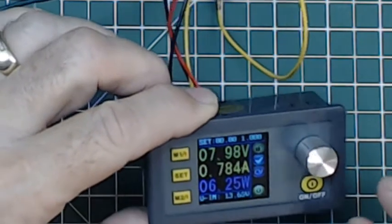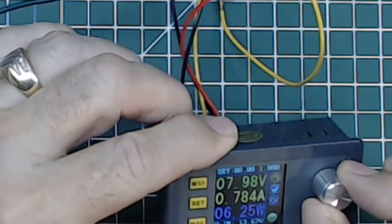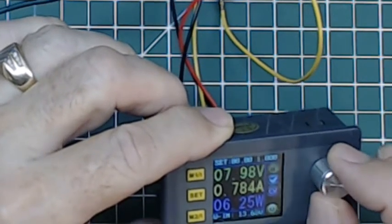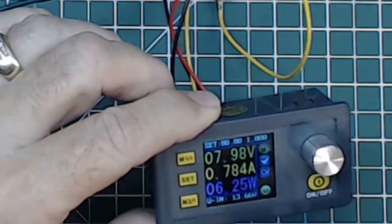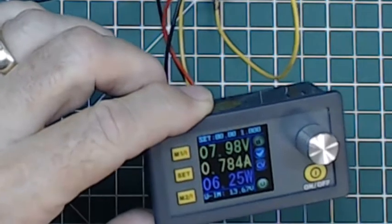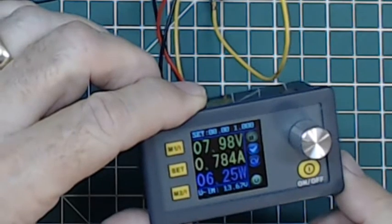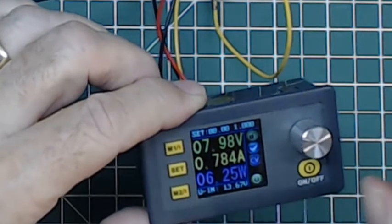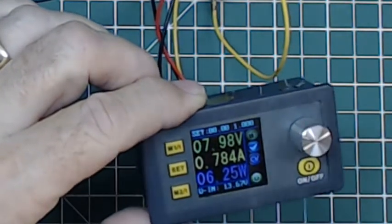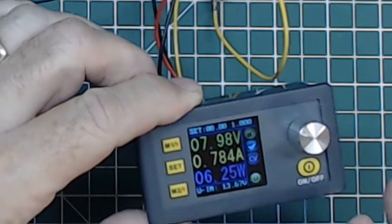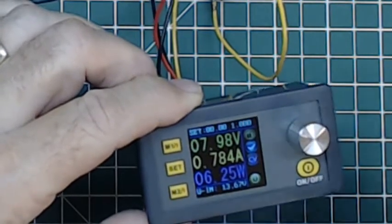You can't adjust anything while you've got it on—you have to pre-adjust it. Unlike some variable power supplies where you can just crank that knob up and down, you've got to set it up before you turn it on and then it's ready to go.